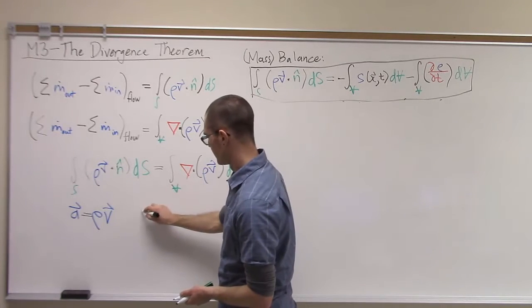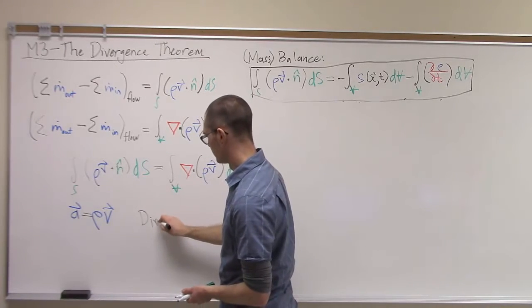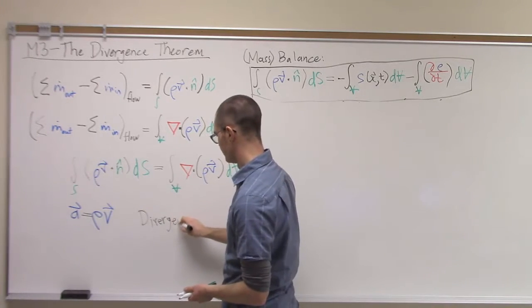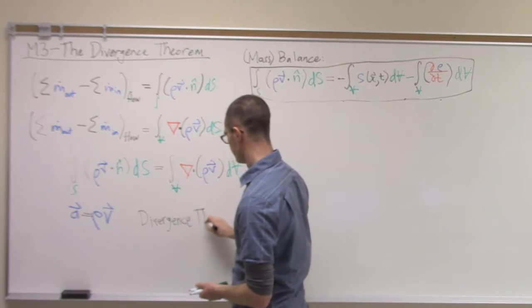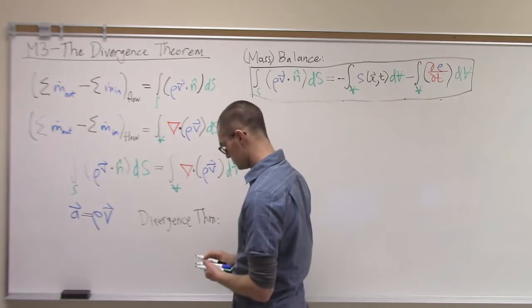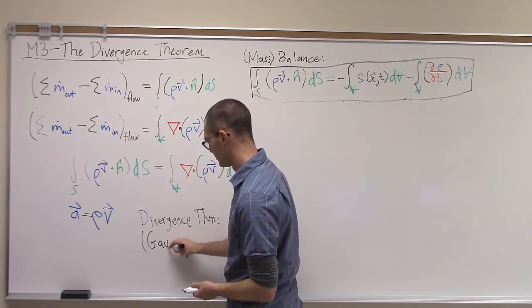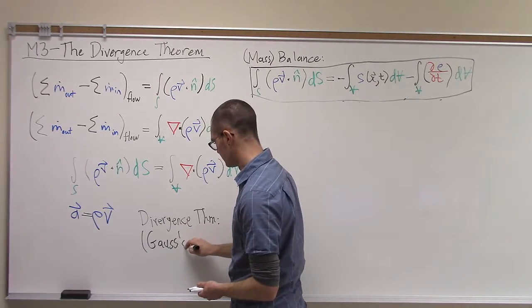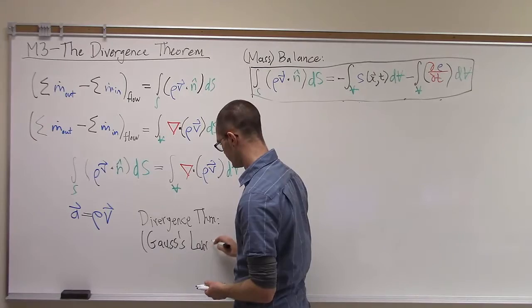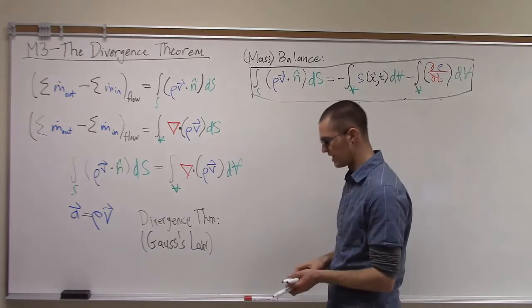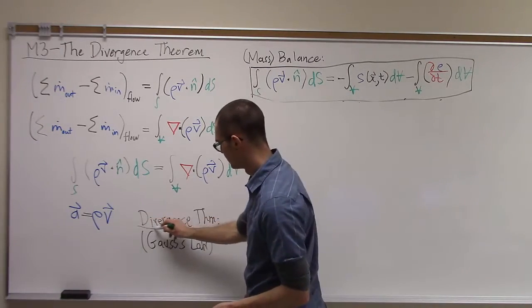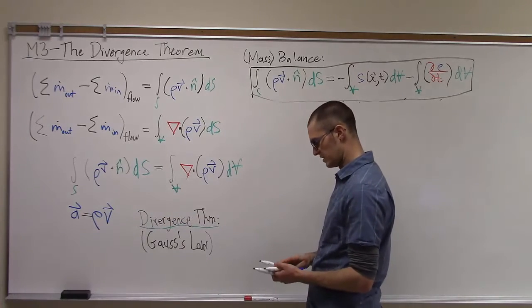So this is what we most properly call the divergence theorem, or in older texts, you might see it referred to as Gauss's law, related to the fact that Gauss was one of the first to observe this equivalence.